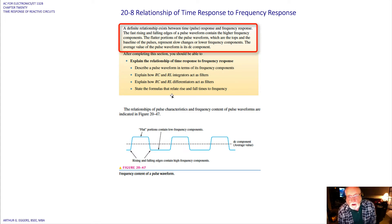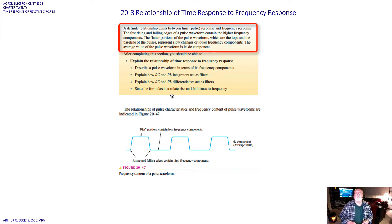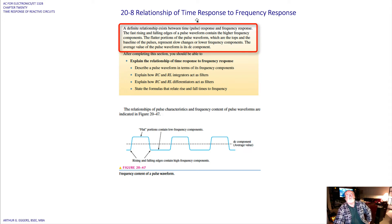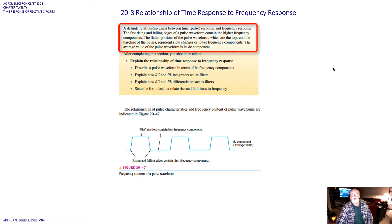Let's look at the relationship of the time response to the frequency response. There are some studies that you will do probably later in your education or career where you'll look at what goes on with the time response and frequency response, looking at the waveforms. Time response is typically something you measure on an oscilloscope; frequency response is something you would measure on a spectrum analyzer. A definite relationship exists between time pulse response and frequency response.